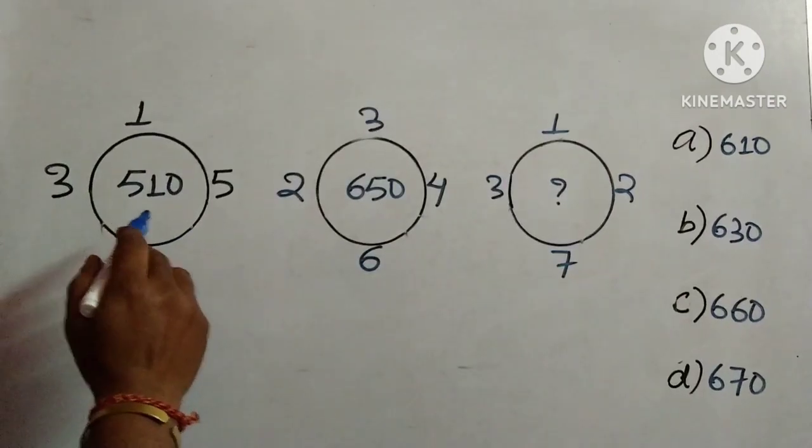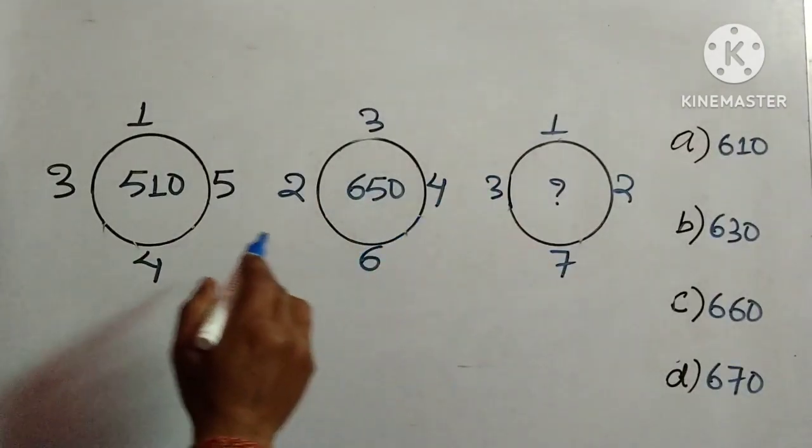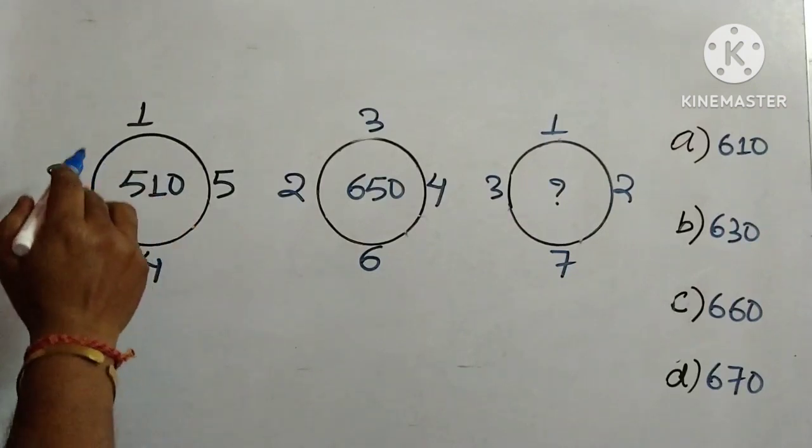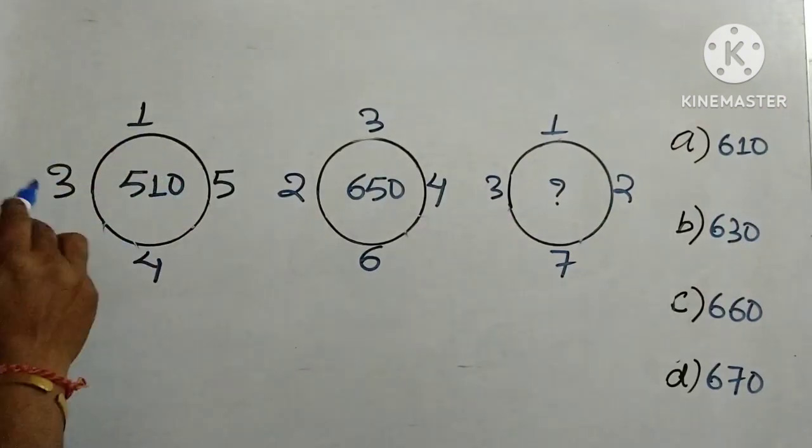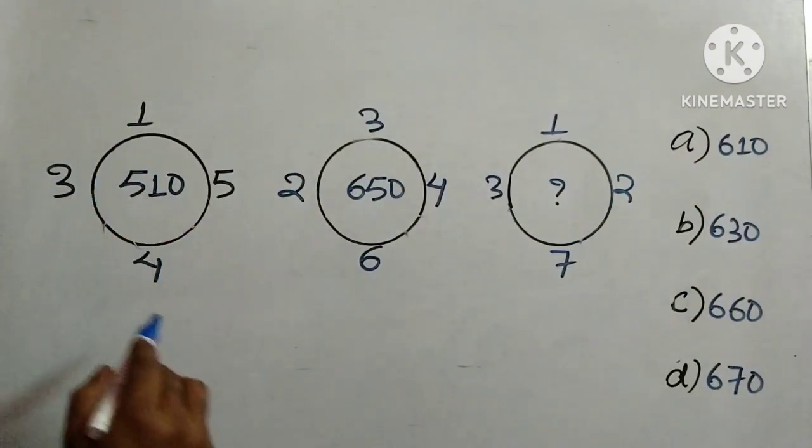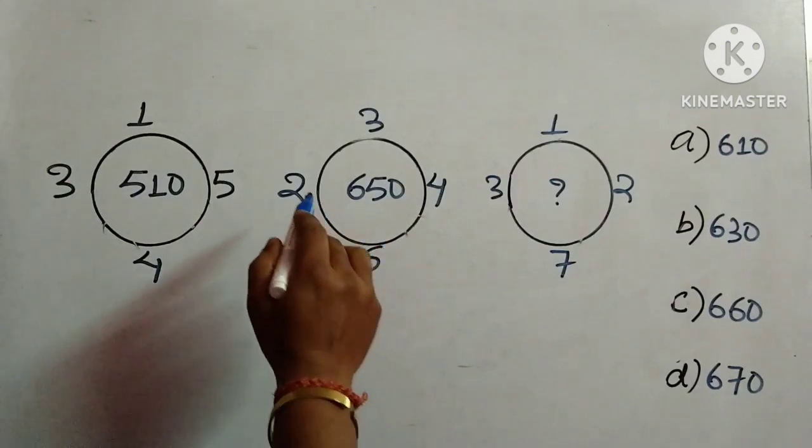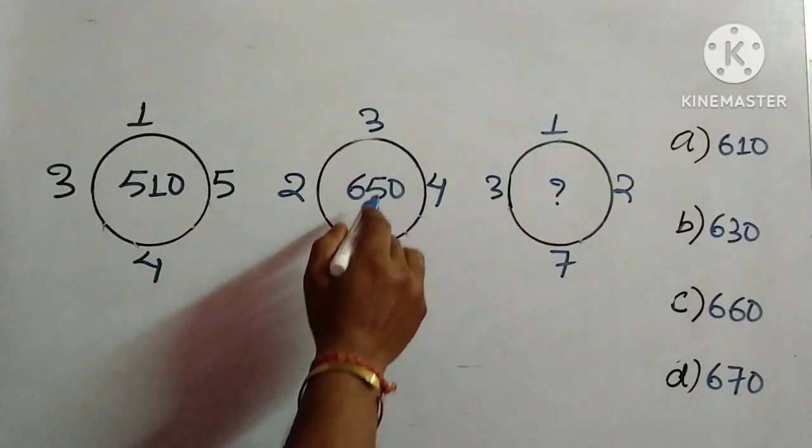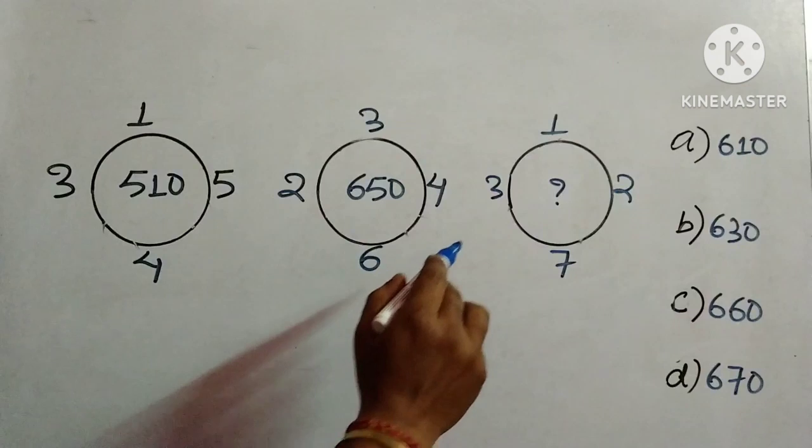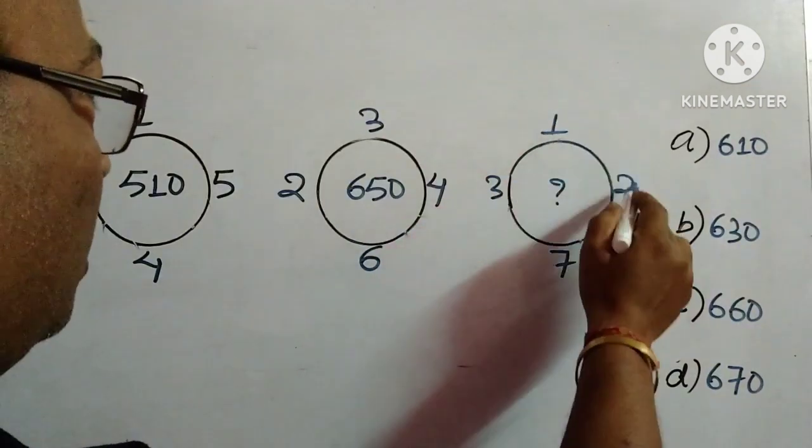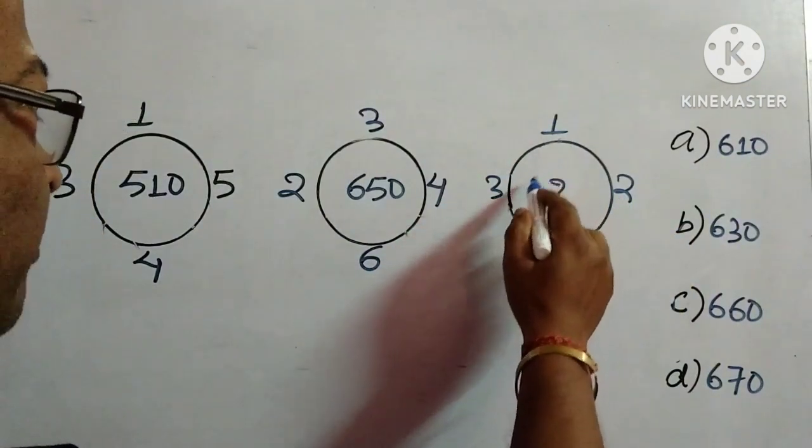This is a number puzzle question where we have three circles. In the first circle, we have 1, 5, 4, 3 around the outside and 510 in the middle. In the second circle, we have 2, 3, 4, 6 and 650 in the middle. In the third circle, we have 1, 2, 7, 3, and we need to find out this number.